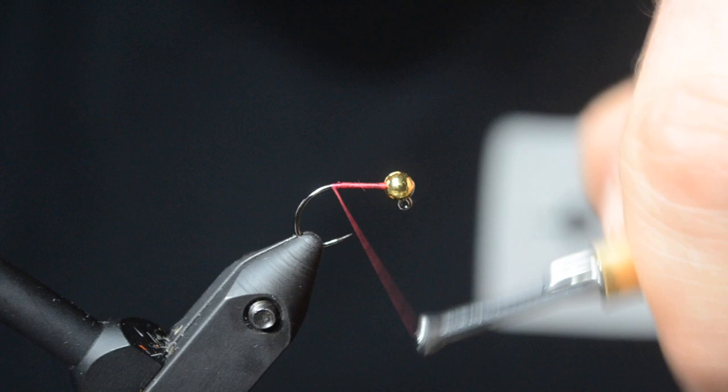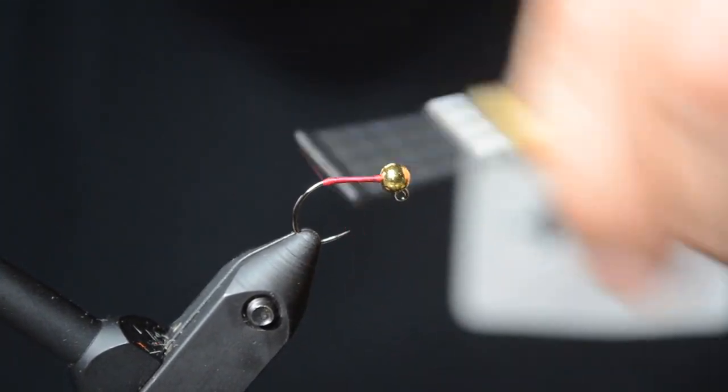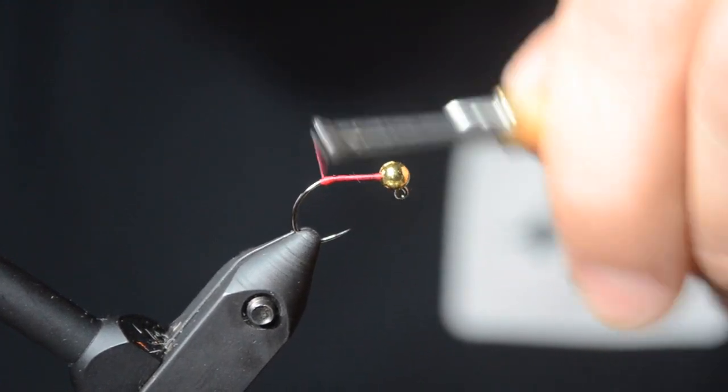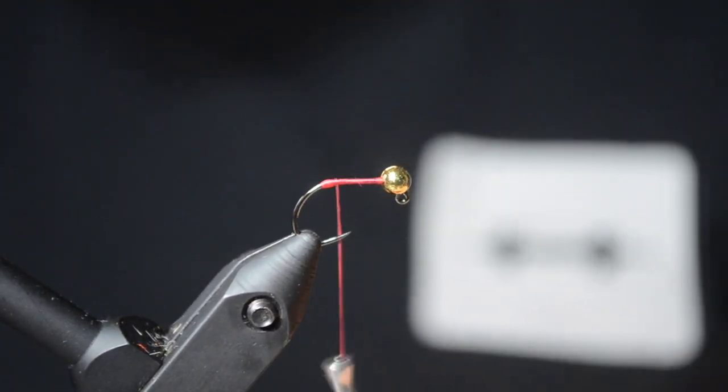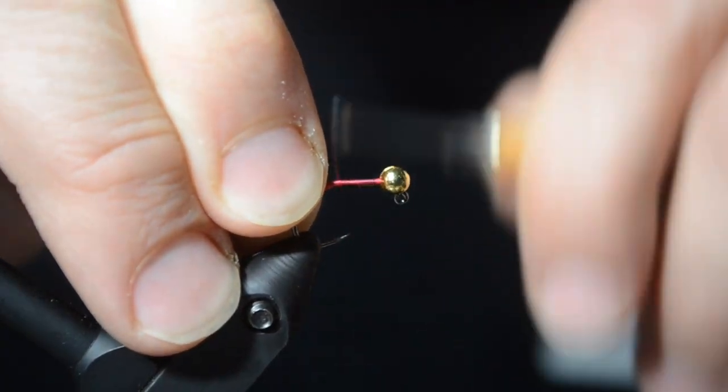Prince Nymph is a great nymph. It represents stoneflies, iso nymphs. Some rivers, they work better than others. On the Farmington early season, they work fairly good.